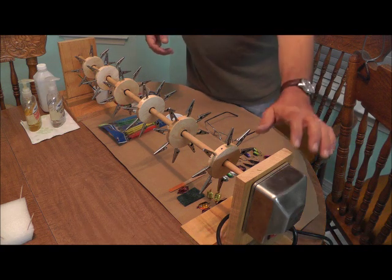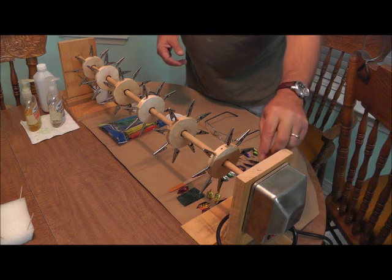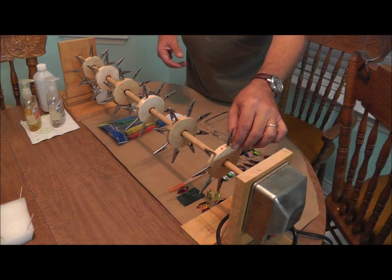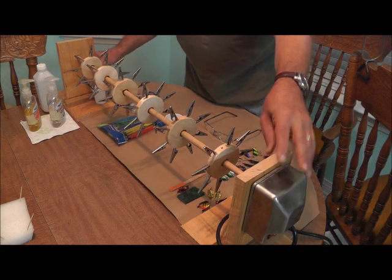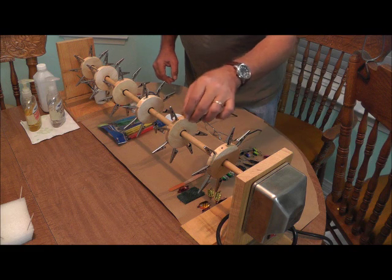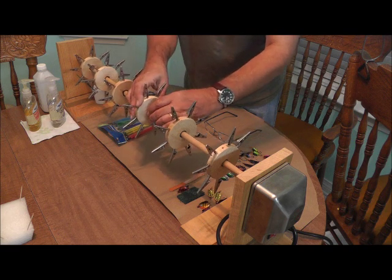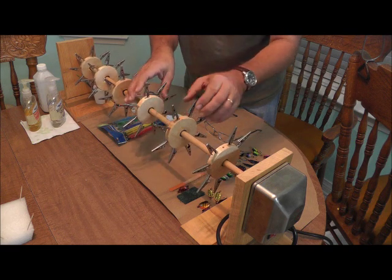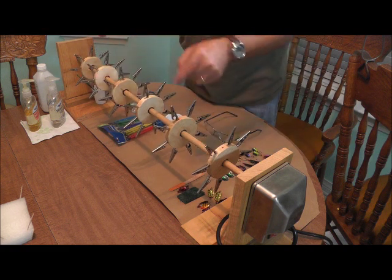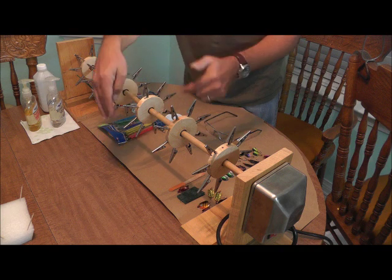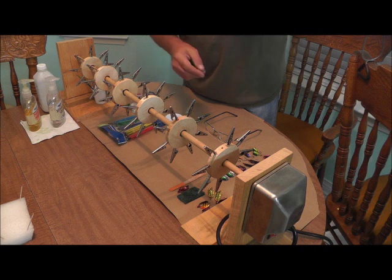It's made out of a barbecue rotisserie motor, and I have a dowel with a stand on this side to hold this end of the dowel. I put these balsa discs on here and some O-rings that I slipped onto the dowel so I can actually adjust the discs. I drilled the hole out a little bit bigger than the dowel and put the clips around the circumference of the disc.